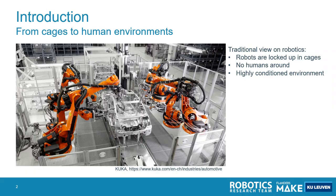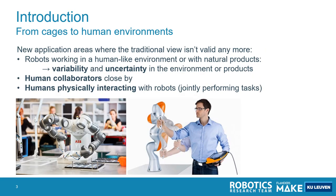Traditionally, robots are used in very conditioned environments where the location of every object is very well known, cages protect human operators, and also ensure that there are few disturbances that can influence the robot task. However, our ambition goes clearly beyond that. We want to apply robotics for smaller series in small enterprises. In these environments, it's difficult to completely separate the robot cell from the rest of the production line using a cage. More flexibility is needed — objects are often not adequately placed by human workers, humans are often operating much closer to the robot, and sometimes humans are even directly interacting with the robots.